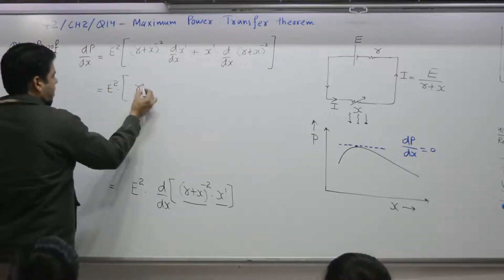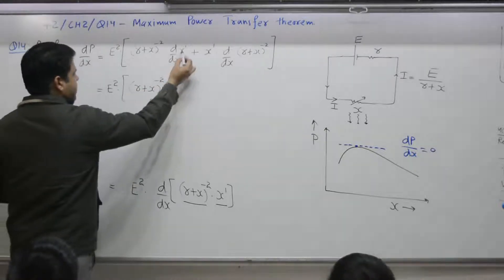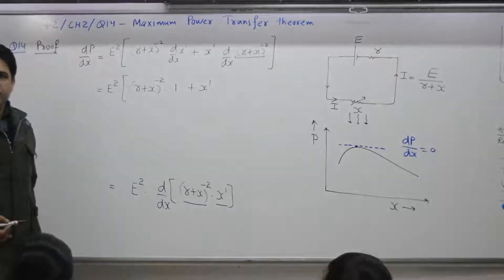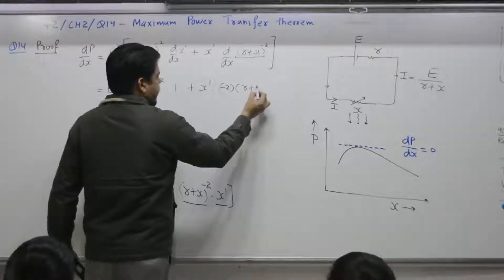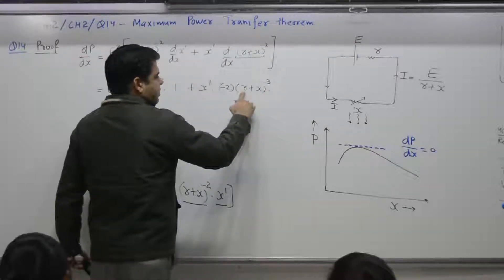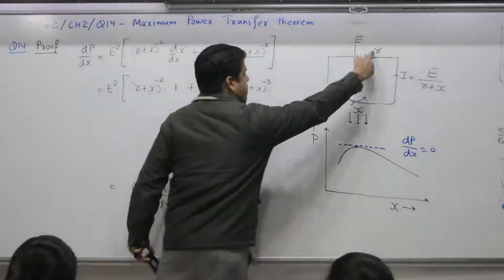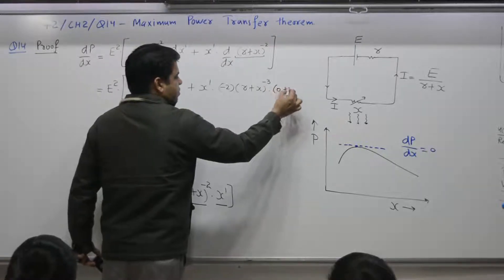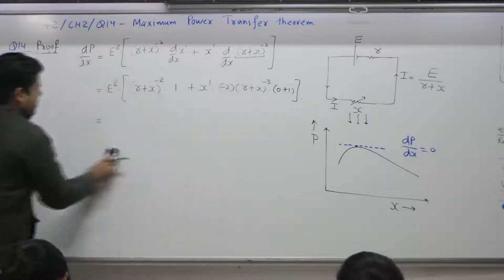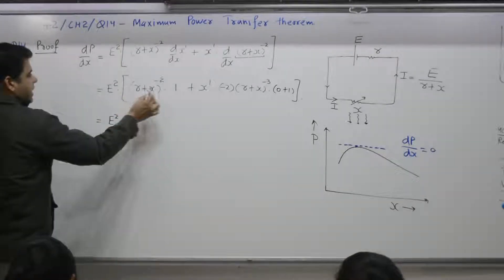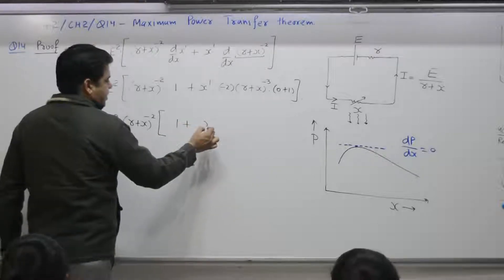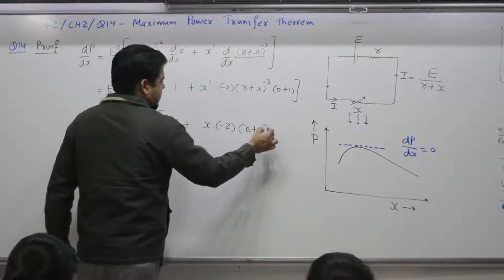You get E squared times (R plus X) to the power minus 2 times d/dX of X, plus X times d/dX of (R plus X) to the power minus 2. For the chain rule term: power N times bracket to the power N minus 1, so minus 2 times (R plus X) to the power minus 3, times the derivative of the bracket. Differentiation of R is 0 (constant) and differentiation of X is 1. So that gives 0 plus 1. Taking (R plus X) to the power minus 2 as common, you get 1 plus X times minus 2 times (R plus X) to the power minus 1.